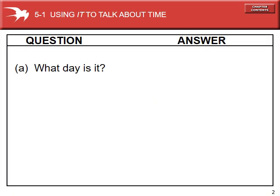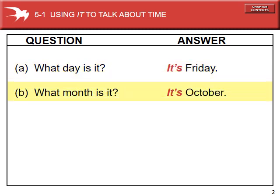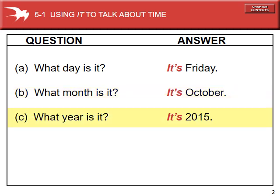We can ask the same sort of question in a variety of ways, asking about different sorts of time. If we say "What day is it?", the answer is going to be a day. And in the long answer, we're going to use "it" as the subject. We can also ask "What month is it?" — the long answer uses "it" as the subject: "It's October." What year is it? It's 2015.